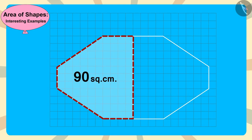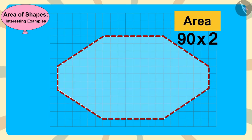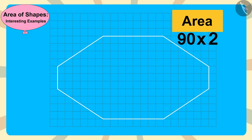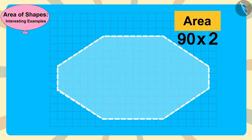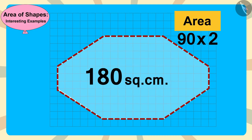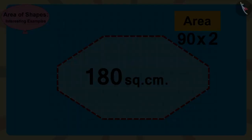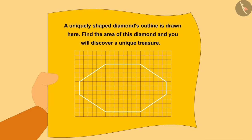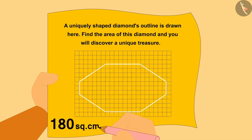And then we will multiply 90 by 2 to find the area of the entire diamond. In this way, the area of this diamond is 180 square centimeters. Chanda too found the answer to this puzzle and wrote the area of the diamond as 180 square centimeters.